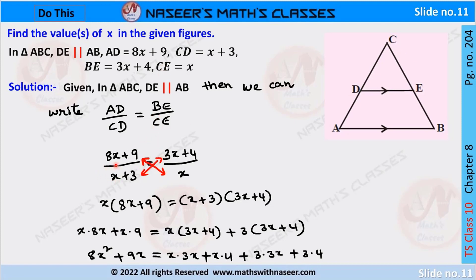We can write AD by CD equals BE by CE. After substituting the given values, we write it as 8X plus 9 by X plus 3 equals 3X plus 4 by X. After cross multiplication, we can write X into 8X plus 9 equals X plus 3 into 3X plus 4.